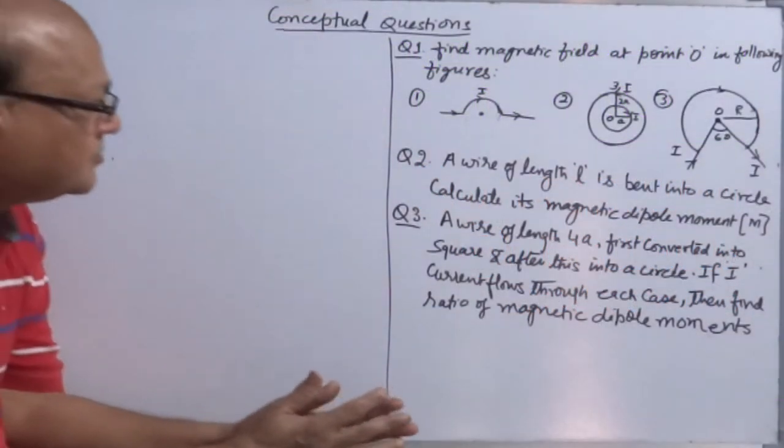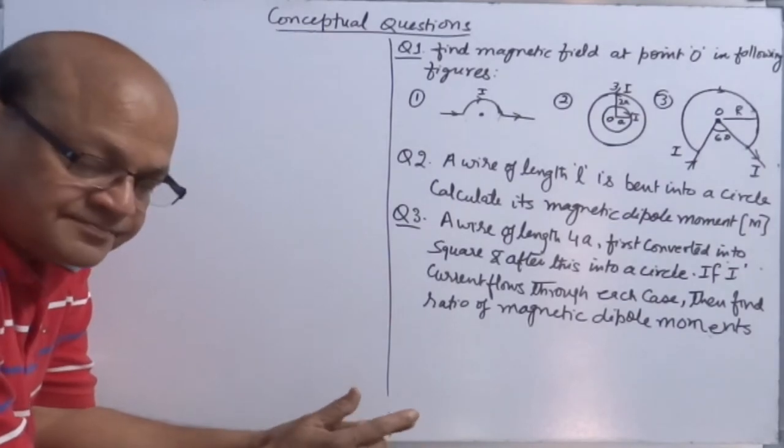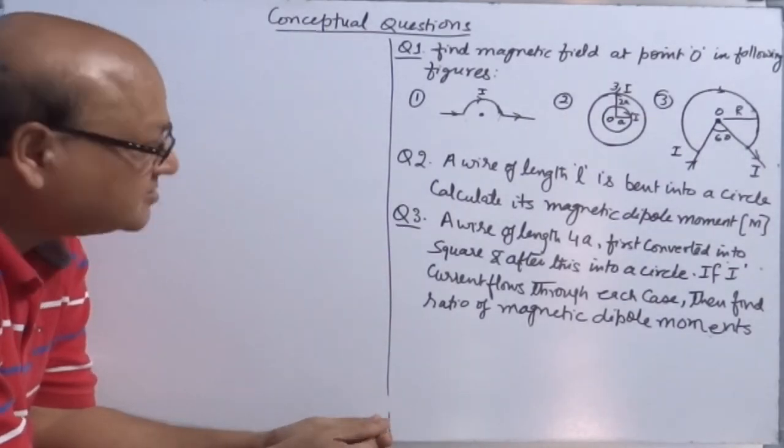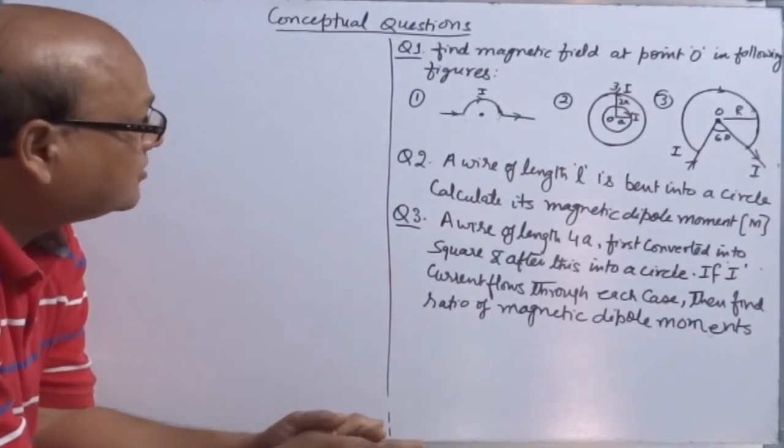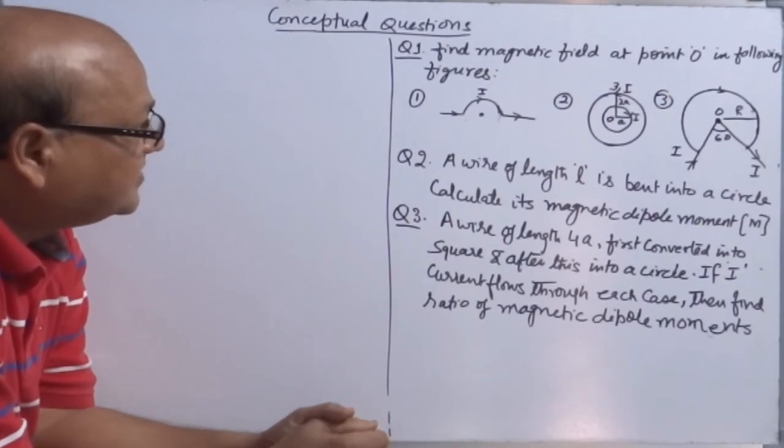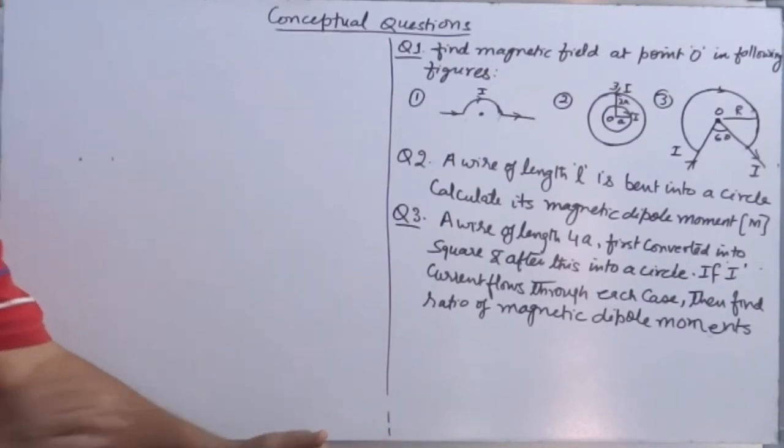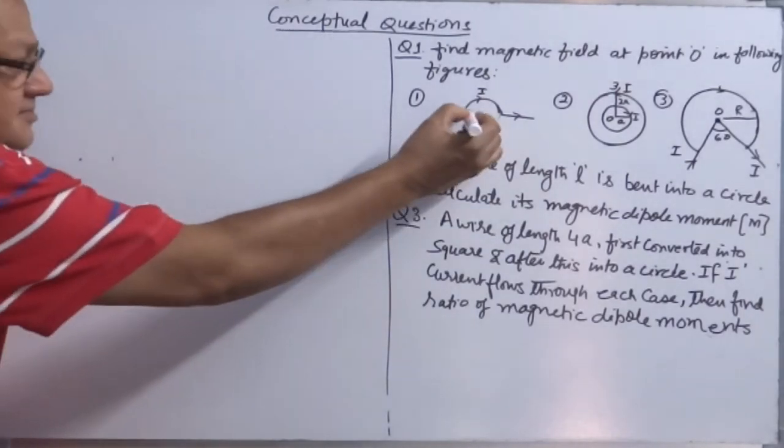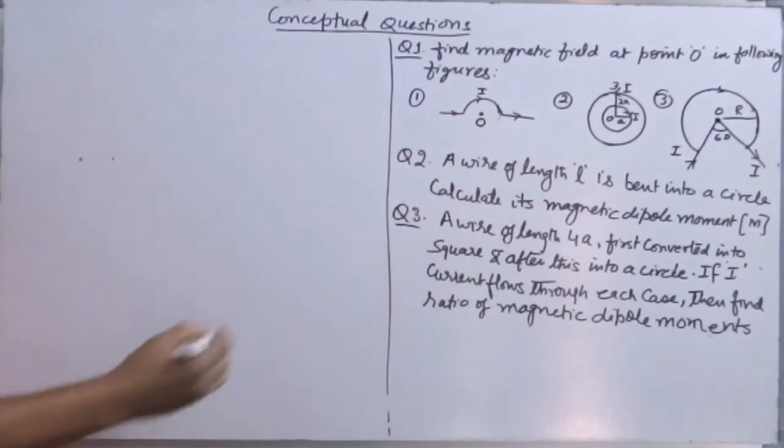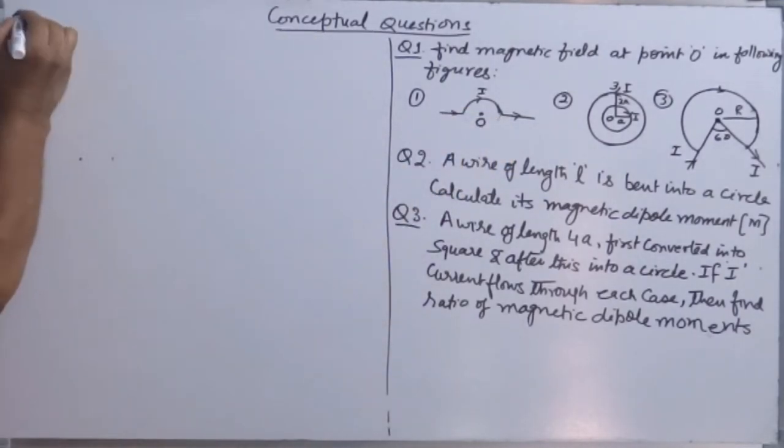Let's see some conceptual questions based on Biot-Savart Law. Find the magnetic field at point O in the following figures. This is O. This is figure 1.